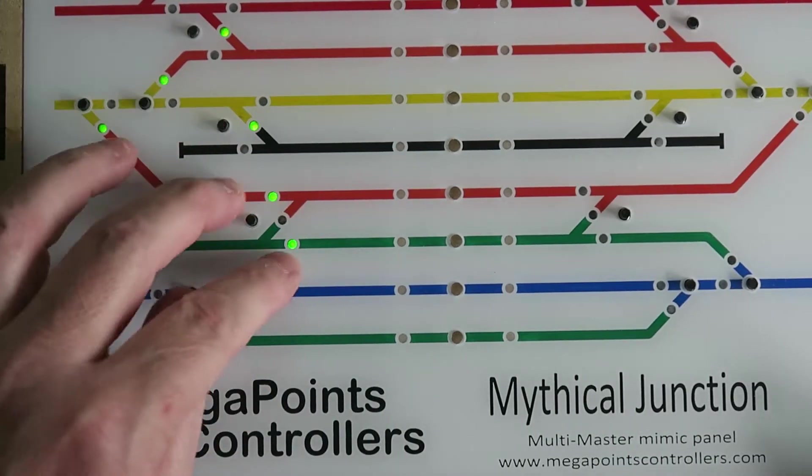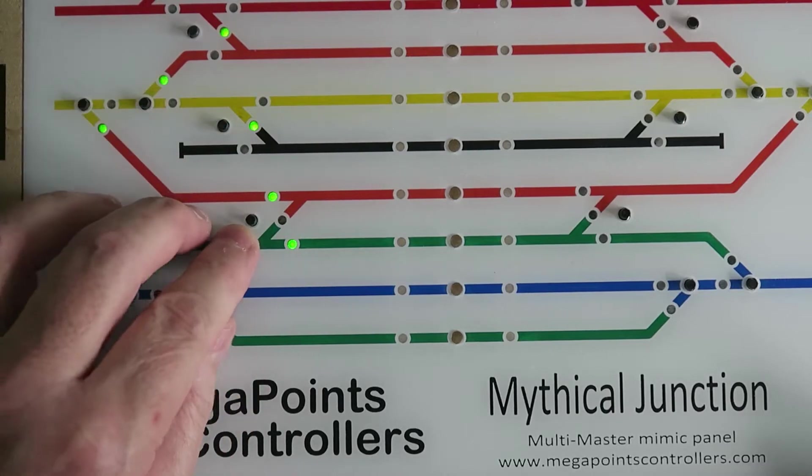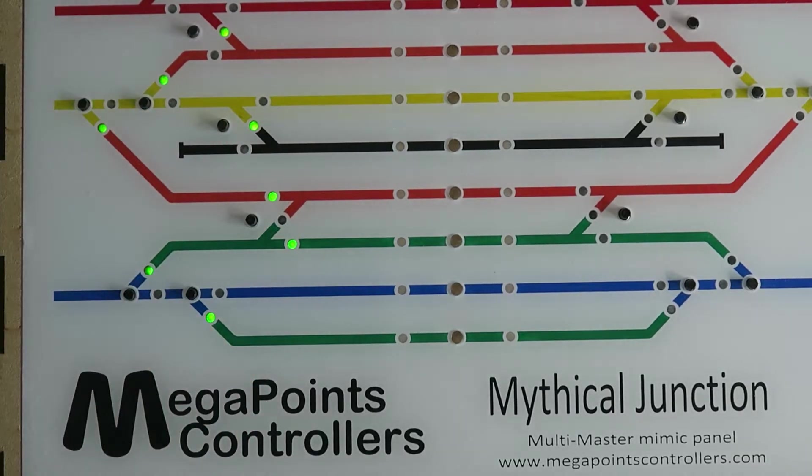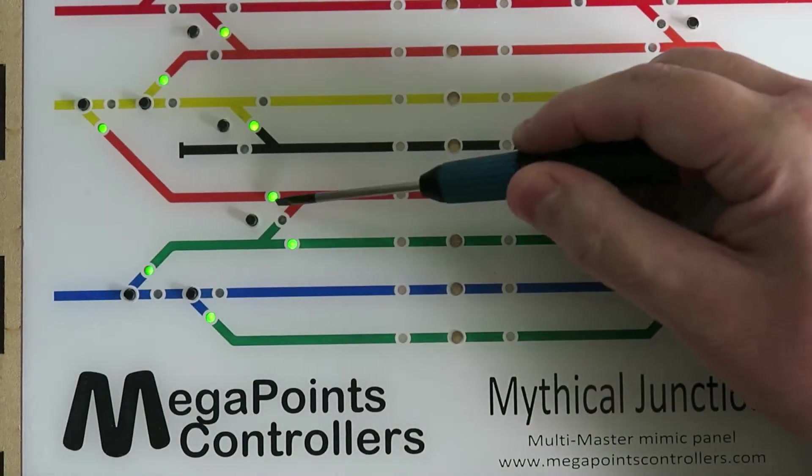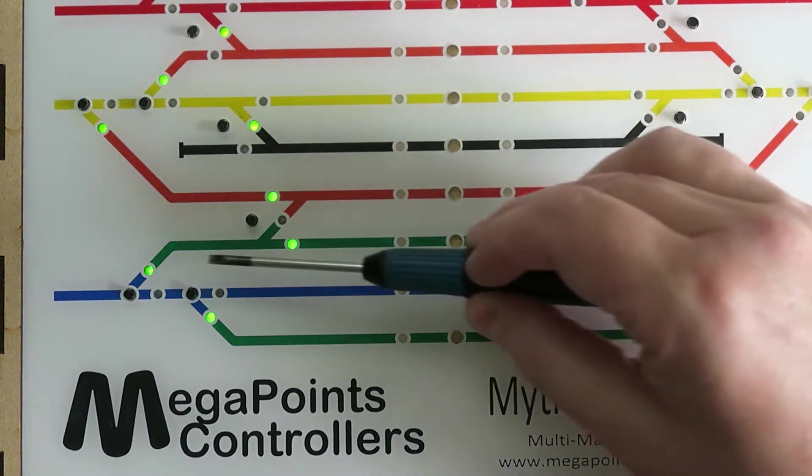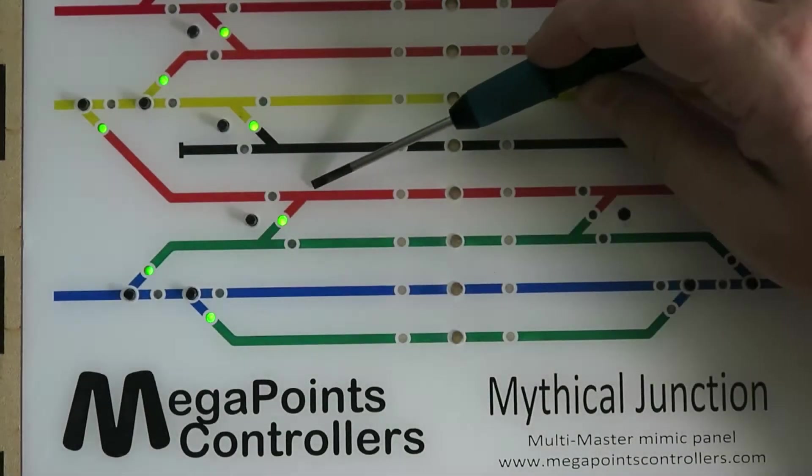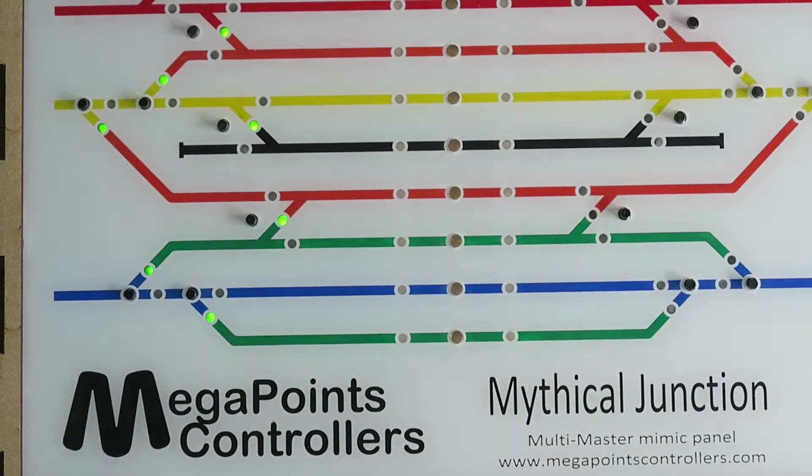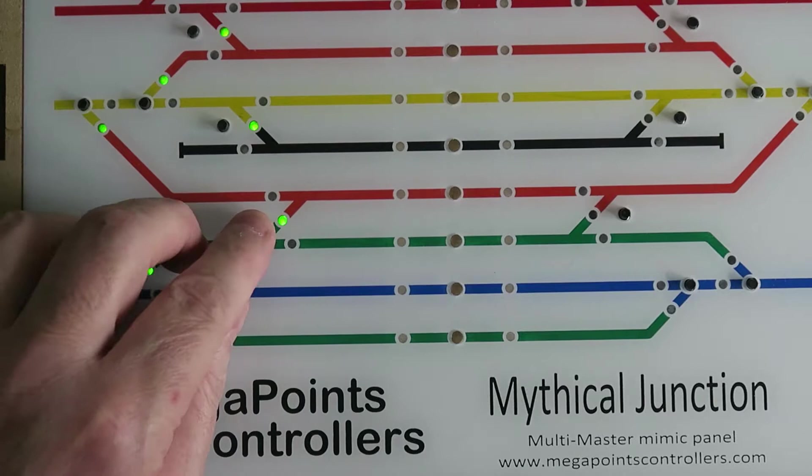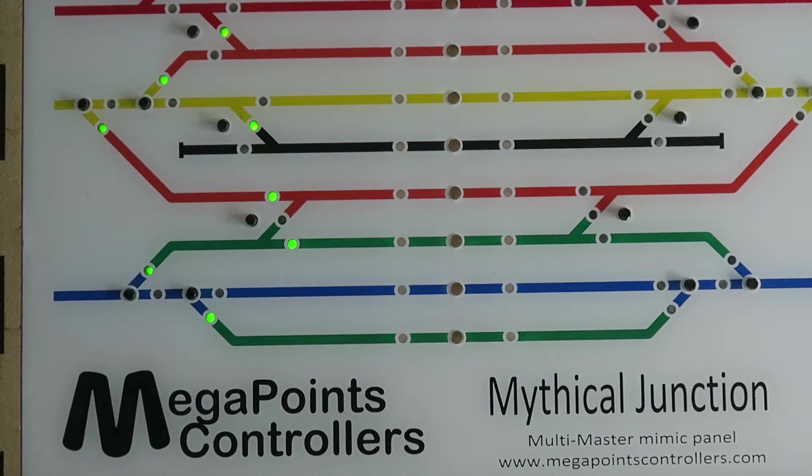If you press a button and you've configured two turnouts to work from the same button as a crossover, you can see here that with the two green lights the track is set for straight. If I press the button, they flash and then you can see the crossover is active and this is normal behavior. Press it again and it goes back.